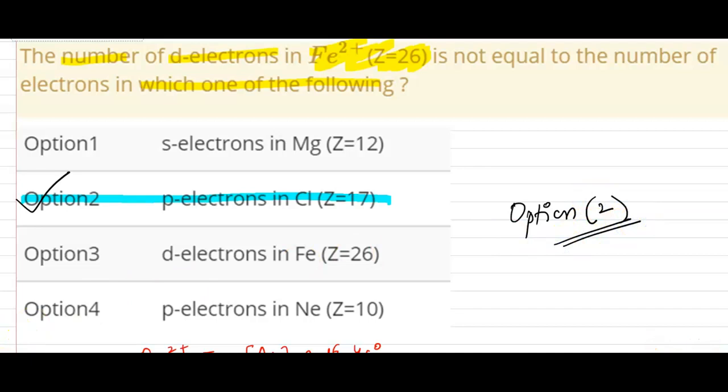In the last option, we have Neon. Neon's electronic configuration is 1S2 2S2 2P6. So this will match with 6 d electrons of Fe2+ in terms of the total number.